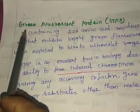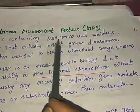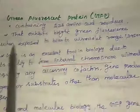The next topic is green fluorescent protein (GFP). The green fluorescent protein contains 238 amino acid residues. It exhibits bright green fluorescence when exposed to blue to ultraviolet light at around 395 nanometers. GFP was isolated from the jellyfish Aequorea victoria.